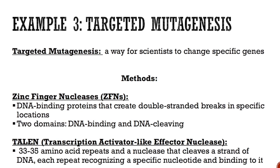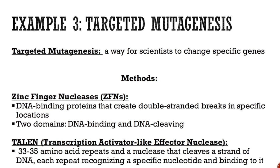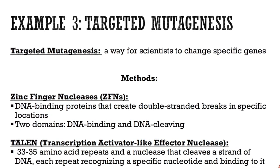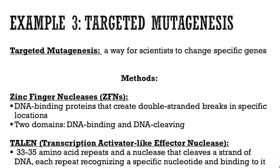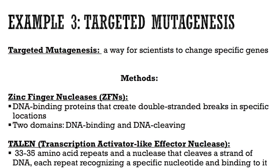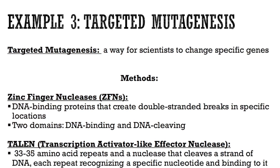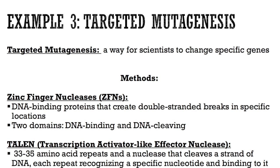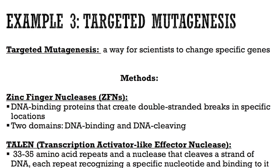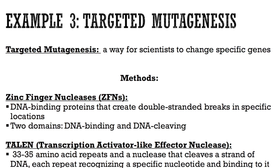The second method is TALEN, which stands for transcription activator-like effector nuclease. It has 33 to 35 amino acid repeats and a nuclease that cleaves a strand of DNA, with each repeat recognizing a specific nucleotide and binding to it.